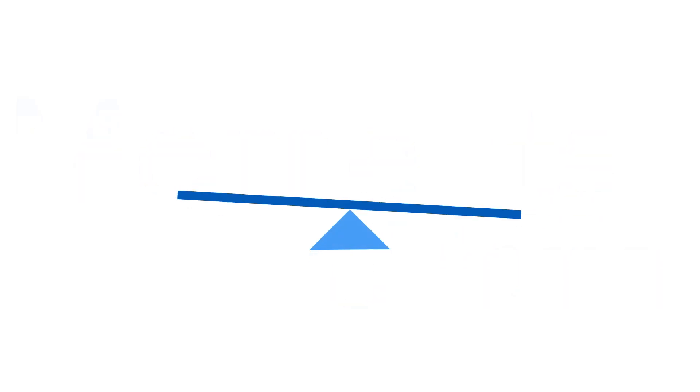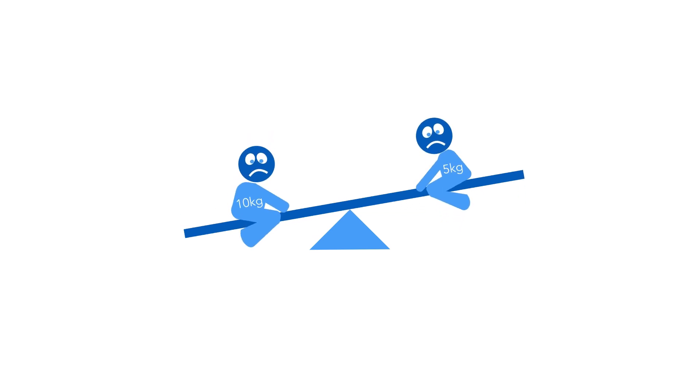This is a balanced seesaw. However, with different weights on each end, it becomes imbalanced. A child's weight is essentially a force of gravity. If one child weighs 10 kilograms, the other weighs 5 kilograms, and they are exactly the same distance away from the centre, how can the seesaw balance again?